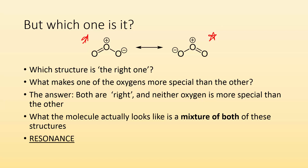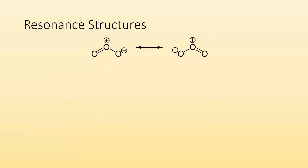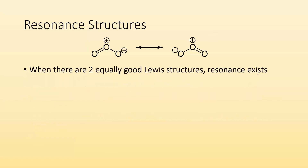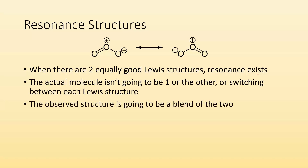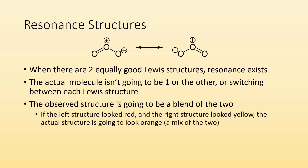Whenever you can ask the question 'why that one and not the other?' and they're equivalent — that's how you know there's resonance. When there are two or more equally good Lewis structures, resonance exists. The actual molecule isn't going to be one or the other, and it's not switching between the two. The observed structure is going to be a blend of those two. If the structure on the left looked red and the structure on the right looked yellow, the actual structure is going to look orange.